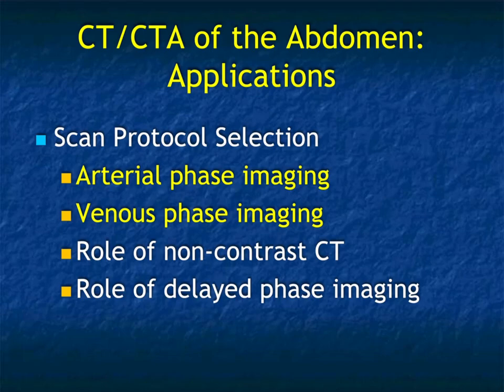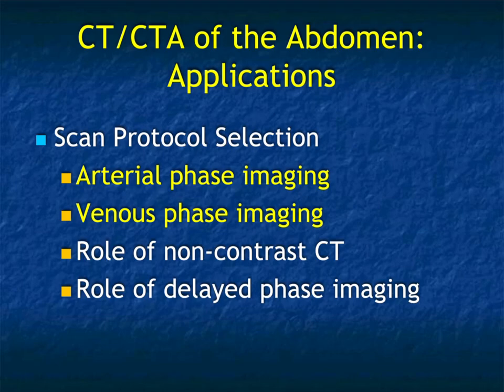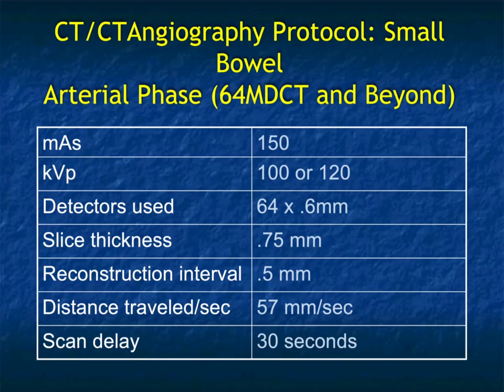Really it's arterial and venous, depending what we're doing. If we're simply ruling out abdominal pain with no specific pathology, venous at about 70 seconds works well. If you're thinking about anything vascular, arterial phase is mandatory, and then typically you're doing arterial and venous. So things like GI bleed, potential ischemia, potential tumors — all of those things are going to get you dual phase acquisition.